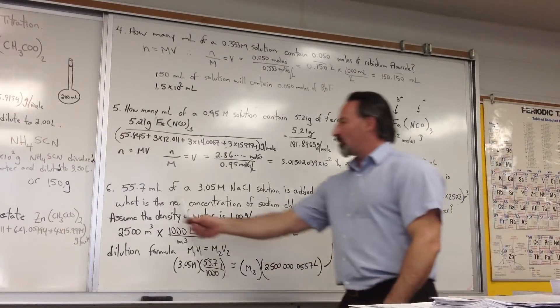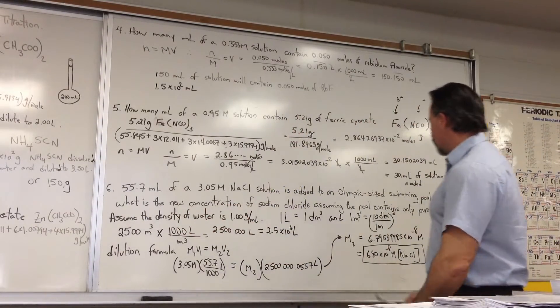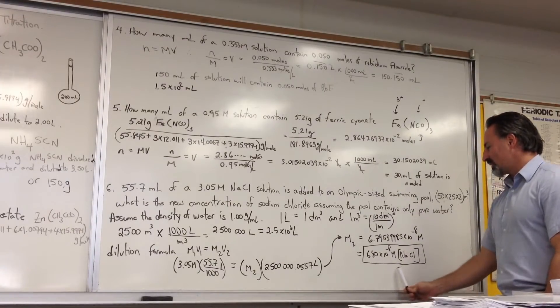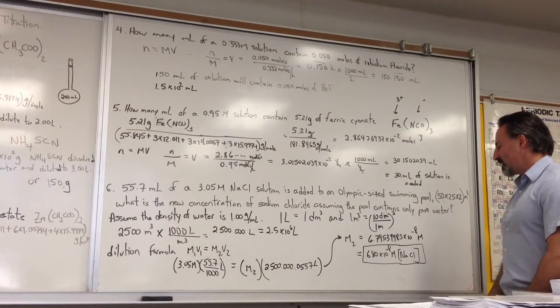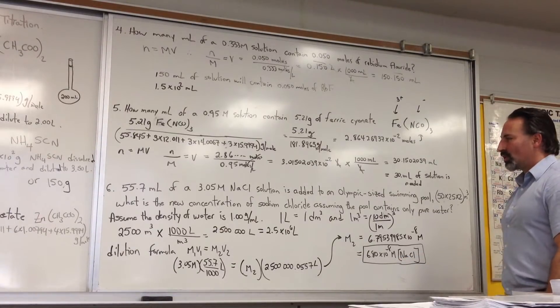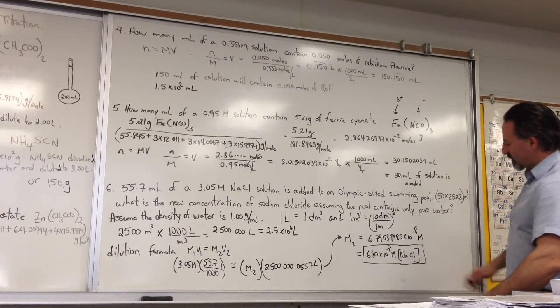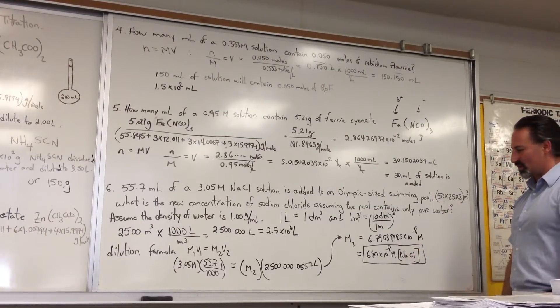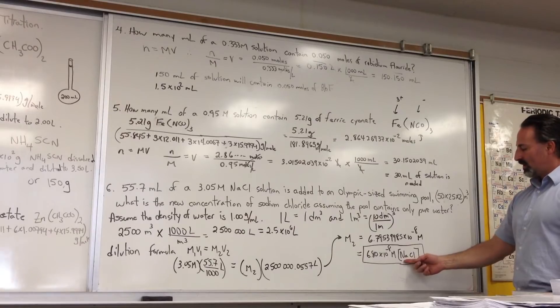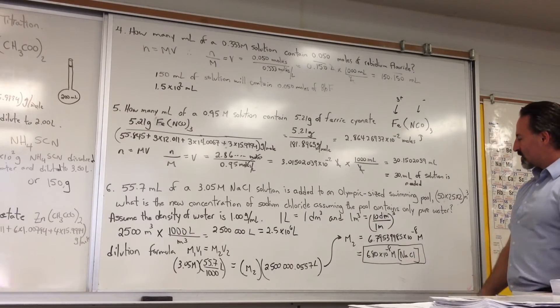We get 6.79539985 times 10 to the minus 8. The original problem only had three significant figures in it, so our final answer could only have three significant figures. That rounds this down to 6.8 times 10 to the minus 8 molar sodium chloride concentration. By the way, whenever you write something in square brackets like that, what you're saying is you're reporting its concentration. So that would be sodium chloride concentration. That's how you read that symbol.